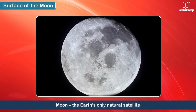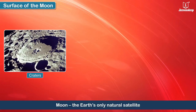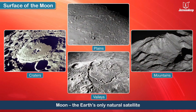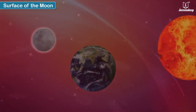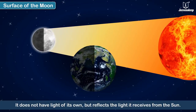Earth's only natural satellite has many craters, plains, mountains and valleys. Scientists believe these were formed around 3.5 to 4.5 billion years ago. The Moon does not have light of its own but reflects the light it receives from the Sun.